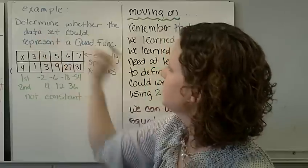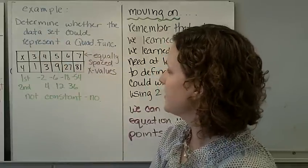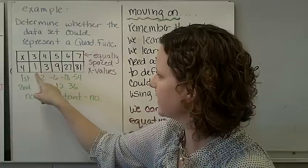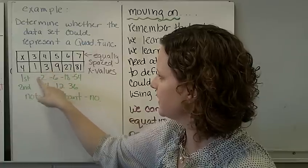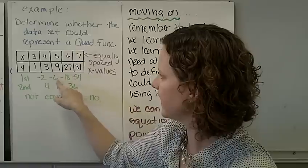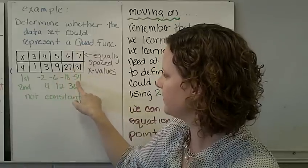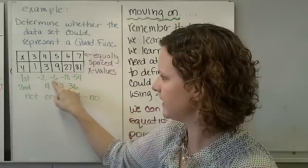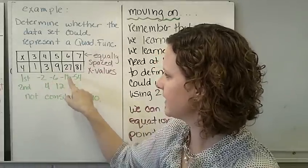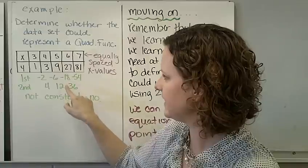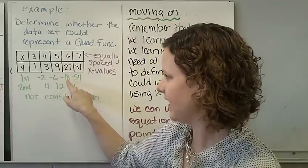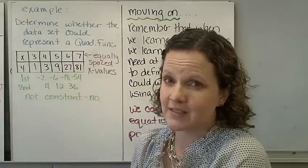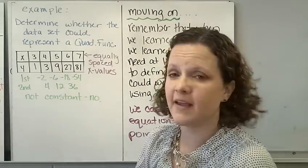Another example. Determine whether the data set could represent a quadratic function. We have equally spaced x values, and we take the differences: negative 2, negative 6, negative 18, negative 54. Our second differences: negative 2 minus negative 6 is 4, negative 6 minus negative 18 is 12, negative 18 minus negative 54 is 36. They are not constant, therefore it does not represent a quadratic function.